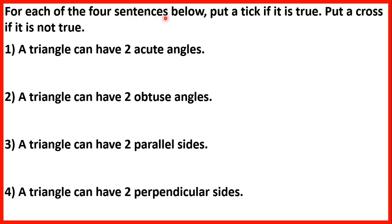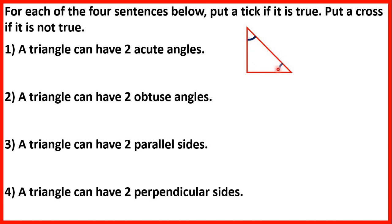For each of the 4 sentences below, put a tick if it is true, put a cross if it is not. First: a triangle can have two acute angles. An acute angle is less than 90 degrees. A triangle can have two acute angles — in this triangle, both of these angles are acute. So our first statement is true.